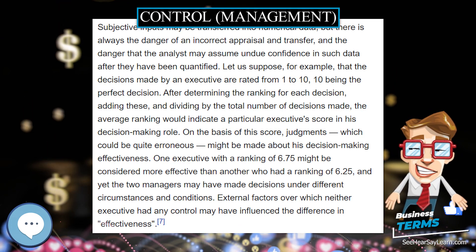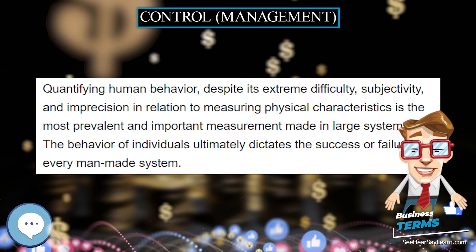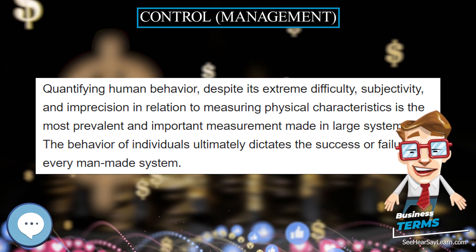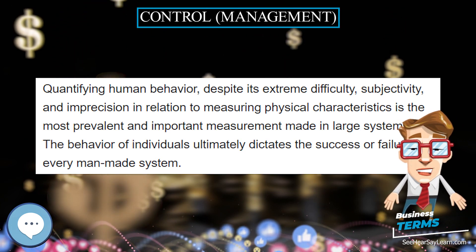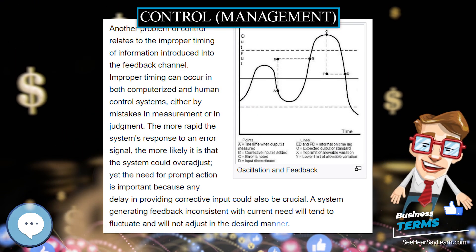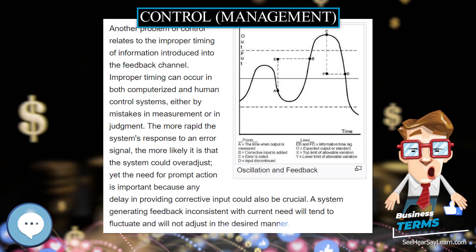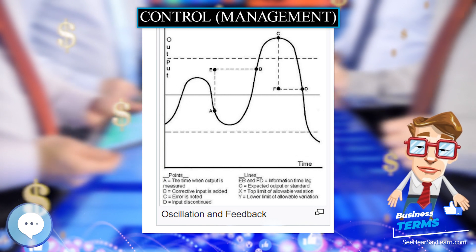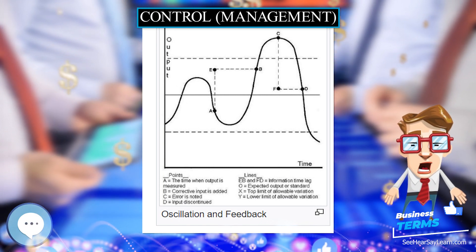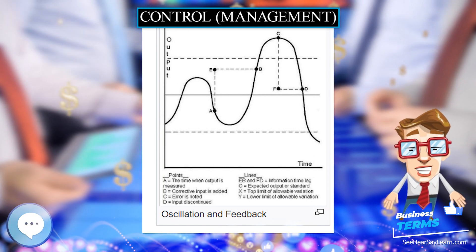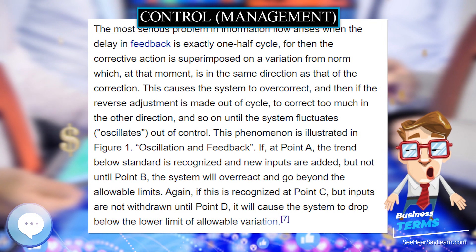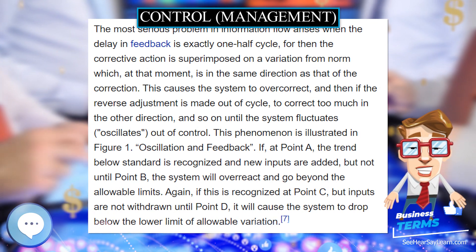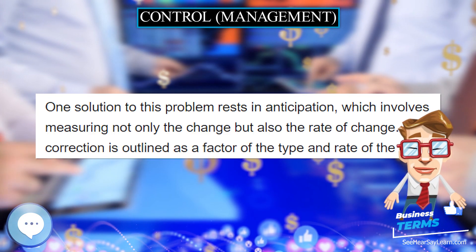The third element of control, the comparator, determines the need for correction by comparing what is occurring with what has been planned. Some deviation from the plan is usual and expected, but when variations are beyond those considered acceptable, corrective action is required. It involves a sort of preventative action which indicates that good control is being achieved.